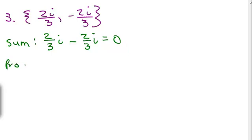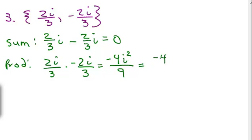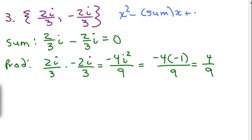And the product is 2i over 3 times negative 2i over 3. So that's negative 4i squared over 3 times 3, 9. Be careful here. So we have negative 4i squared is negative 1. So I've got 4/9. So remember it's x squared minus the sum times x plus the product equals 0. And again, we've got a sum of 0. So we know this middle term is not going to be there. We're going to have x squared plus 4/9 equals 0.